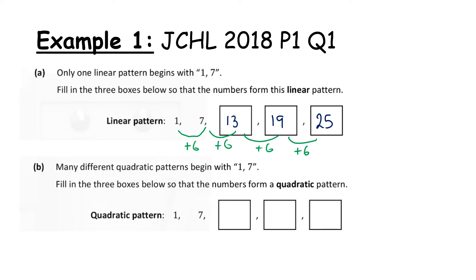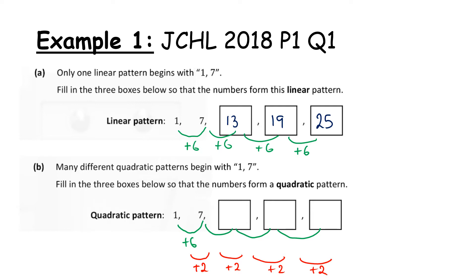Many different quadratics begin with 1 and 7 — fill in the three boxes so that the numbers form a quadratic pattern. For a quadratic, I'm adding 6 the first time but the next addition won't be 6. What is common is the second difference. Let's say the second difference is add 2. So if I'm adding 6 first, the next differences are 8, 10, 12, and 14.